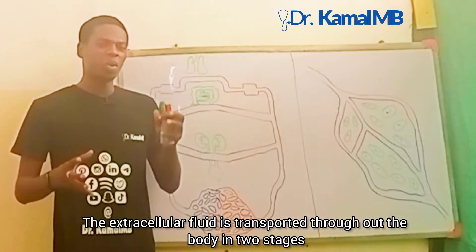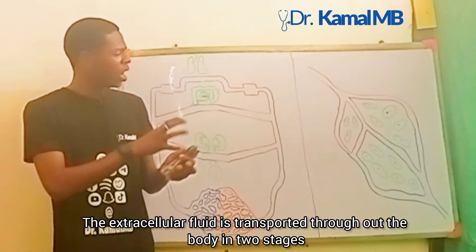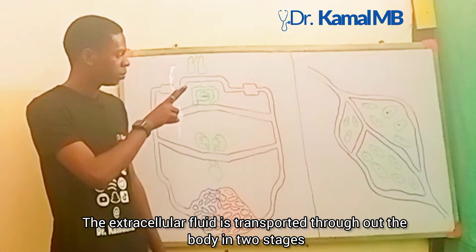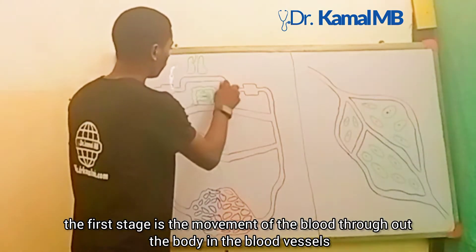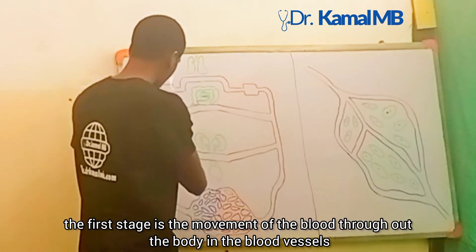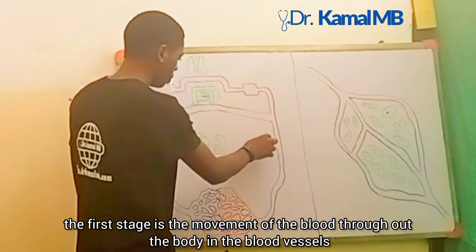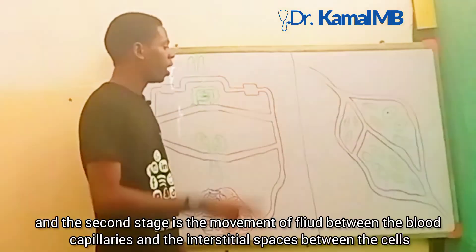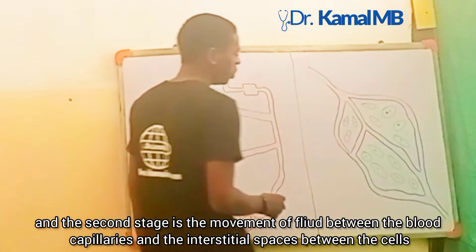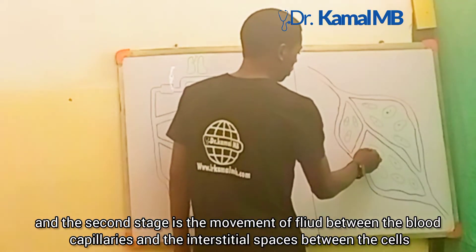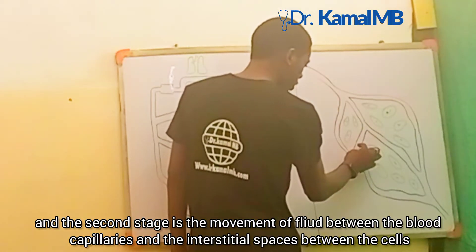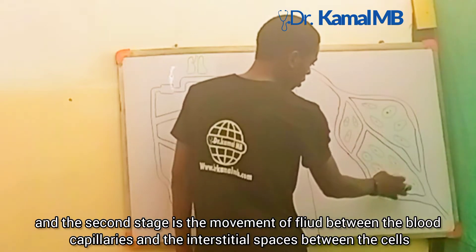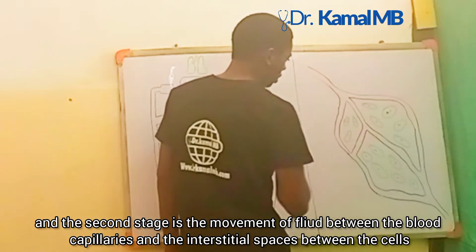The extracellular fluid is transported throughout the body in two stages. The first stage is the movement of blood throughout the body in the blood vessels, and the second stage is the movement of fluid between the blood capillaries and the interstitial spaces between the cells.